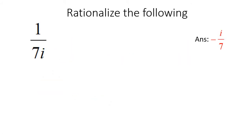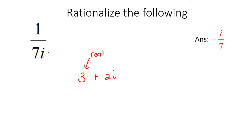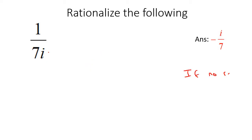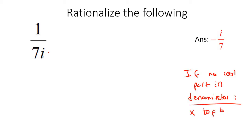So here is our first example. When they give you a question where at the bottom there's no real part — like 3 plus 2i, that would have a real part and an imaginary part — but if there's no real part, then all that you do is multiply the top and the bottom with i. That's all you're going to do.